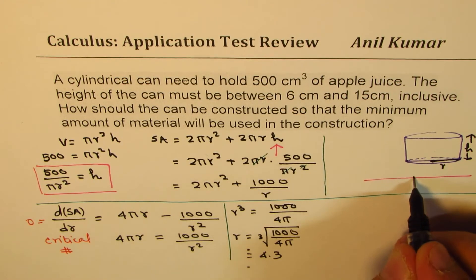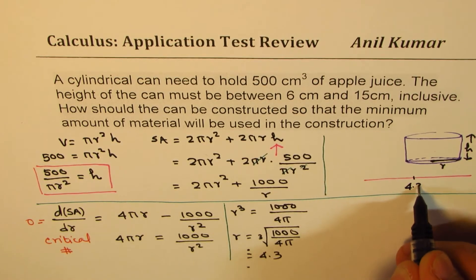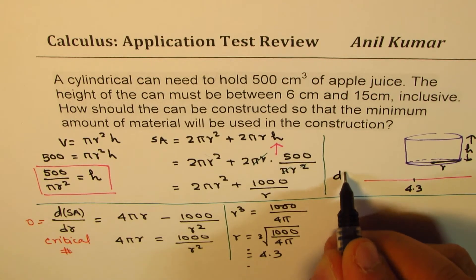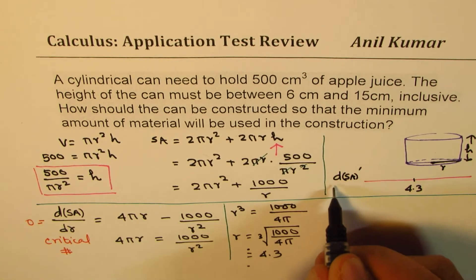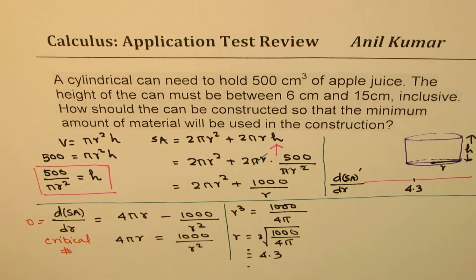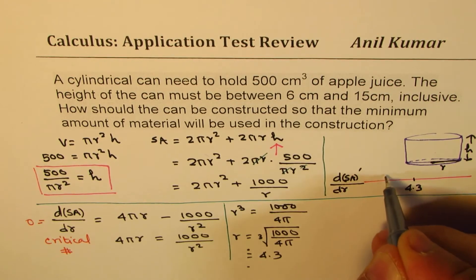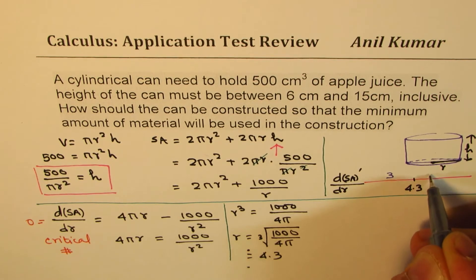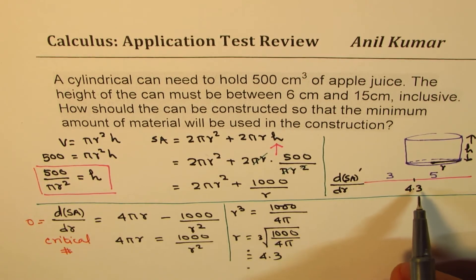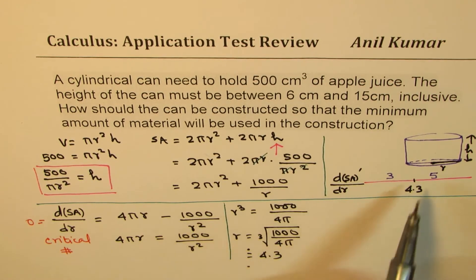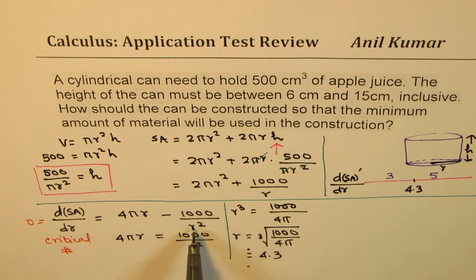We are trying to check whether 4.3 is the minimum cost or not. So we are checking the derivative of surface area with respect to r. Now, if I take a value which is less than 4.3, let us say 3 and more than 4.3 of radius, let's say 5. In that case, the derivative is right there. So for 4.3, we get a zero.